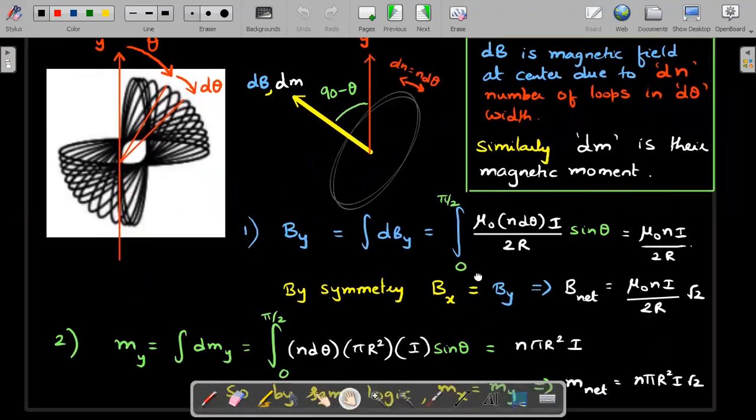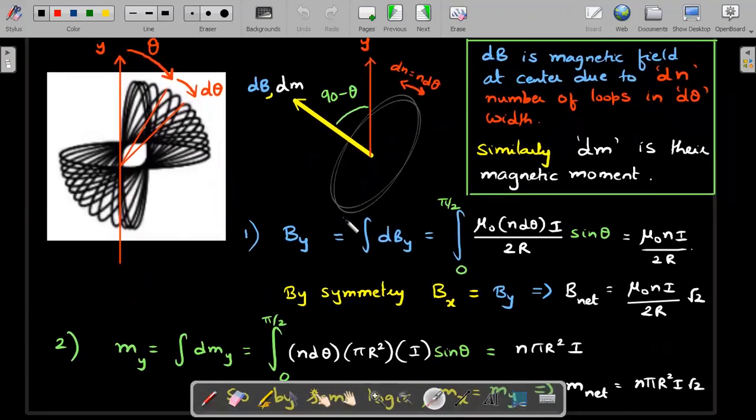This n times d theta turns would produce a magnetic field at the center and also produce a magnetic moment in the same direction. I'm using the symbols dB and dm for that vector contribution of this part of the coil. Since this is theta, it won't be difficult for you to know that this would be 90 minus theta with y axis.